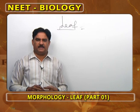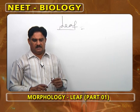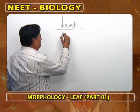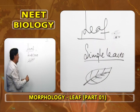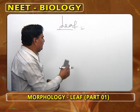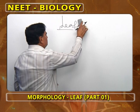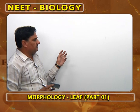Venation: reticulate in dicots, parallel in monocots; exceptions — Smilax and Dioscorea (monocots with reticulate), Calophyllum and Eryngium (dicots with parallel). Types include unicostate/multicostate reticulate, convergent/divergent. Leaf types: simple (entire, unlobed, lobed) and compound. Phyllotaxy types: alternate (Hibiscus), opposite (decussate — Calotropis, superposed — Quisqualis), whorled (Nerium), leaf mosaic (Achillea).